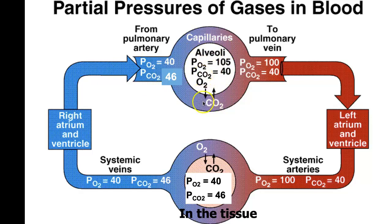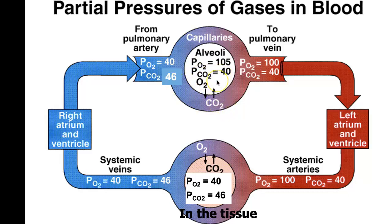You have oxygen coming into the blood and CO2 leaving the blood. The alveoli partial pressure of oxygen is 40. Let's look at oxygen first — we're looking at 40 in the blood and 105 in the alveoli. That is going to allow oxygen to travel down its pressure gradient and move into the blood. Carbon dioxide is going to go the opposite: 46 to 40, moving down its pressure gradient into the alveoli so you can breathe it out. So now entering the pulmonary veins, we have a partial pressure of oxygen of 100 and CO2 is 40.